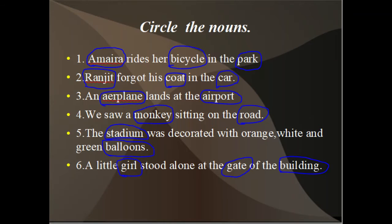Sentence three: An aeroplane lands at the airport. Aeroplane is a thing and airport is a place, so aeroplane and airport are the nouns. Sentence four: We saw a monkey sitting on the road. Monkey is an animal and road is a place.